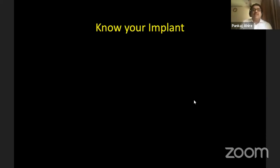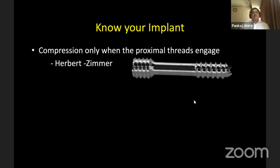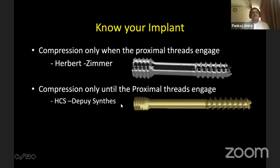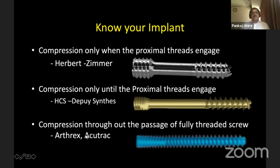It is really important to know your implant well. There are three varieties: the classical Herbert screw, where compression occurs only when the proximal threads start engaging the bone fragment because it works on the principle of differential pitch. The HCS (DePuy Synthes headless compression screw), where compression is achieved only until the proximal threads engage — once the proximal threads start engaging there is no further compression possible, as this is not differential pitch but simply a double helix of the same pitch. The third is the Acutrak type, not available in India, which is a fully threaded screw where compression is achieved throughout the passage of the screw.